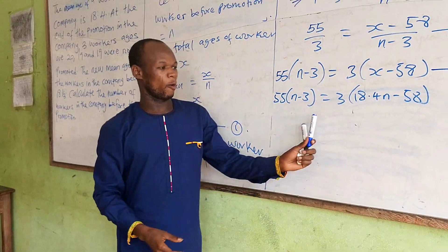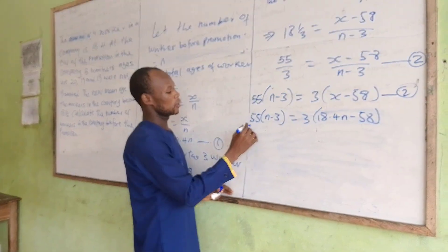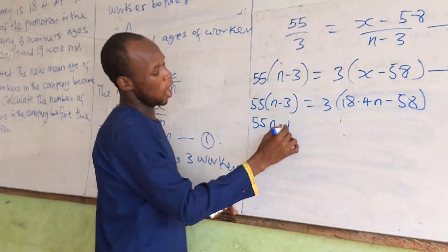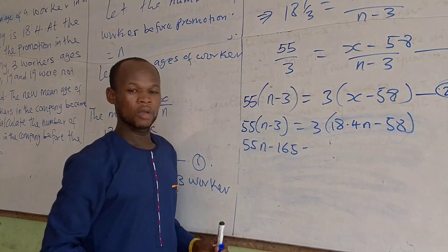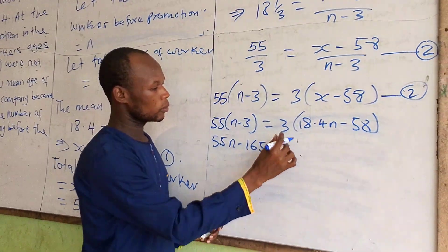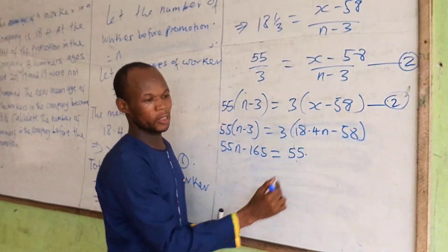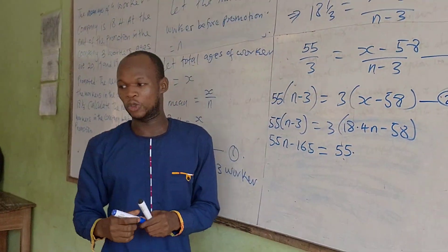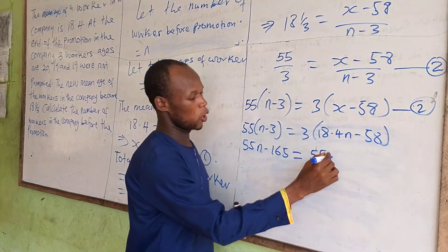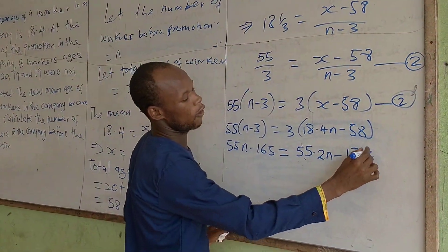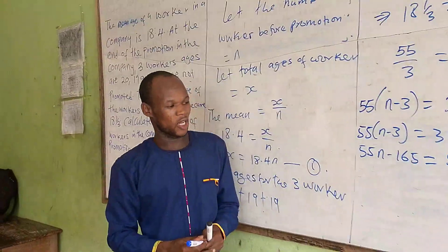So with this one, we can expand the brackets. So we have 55n minus 165 equal to, this multiply by this, you get 55.2n, and this multiply by this, 174.